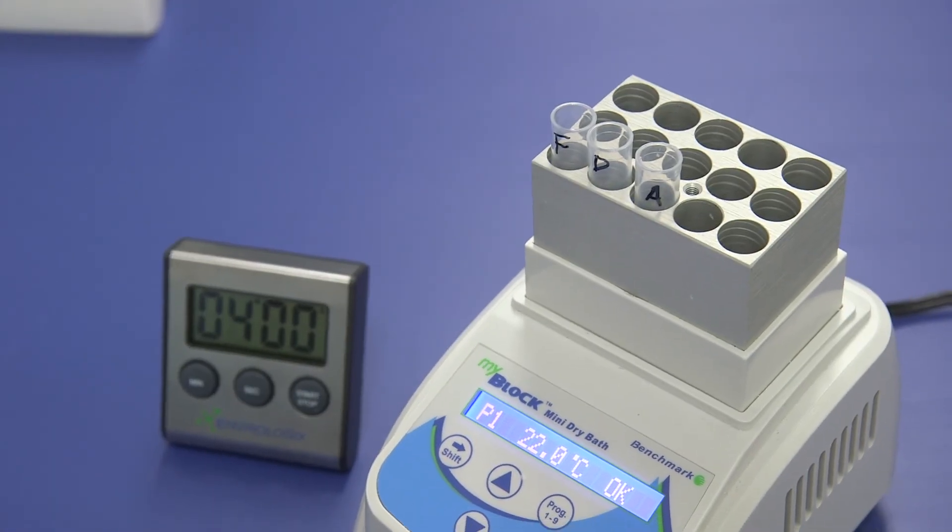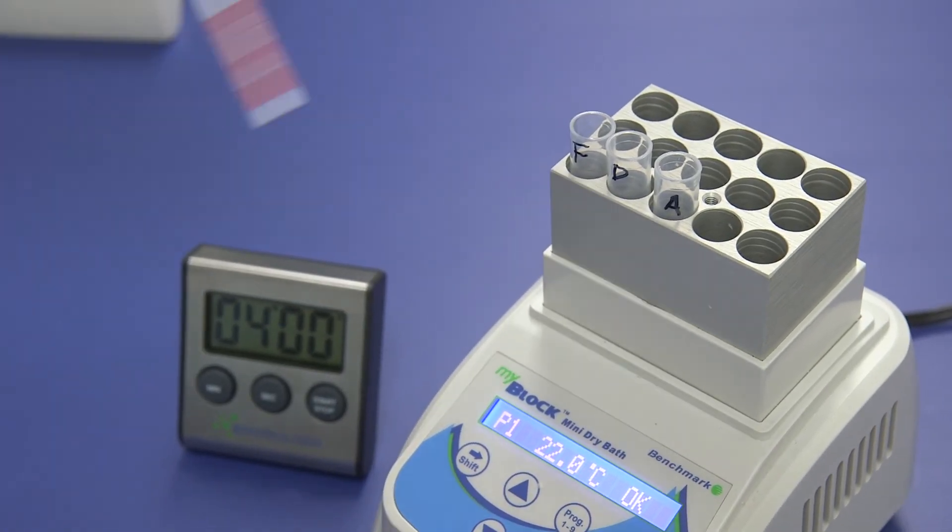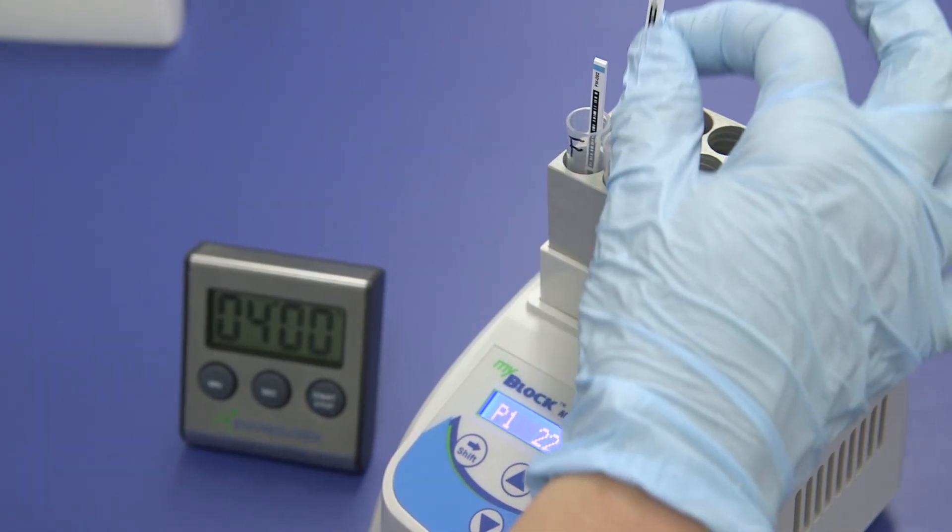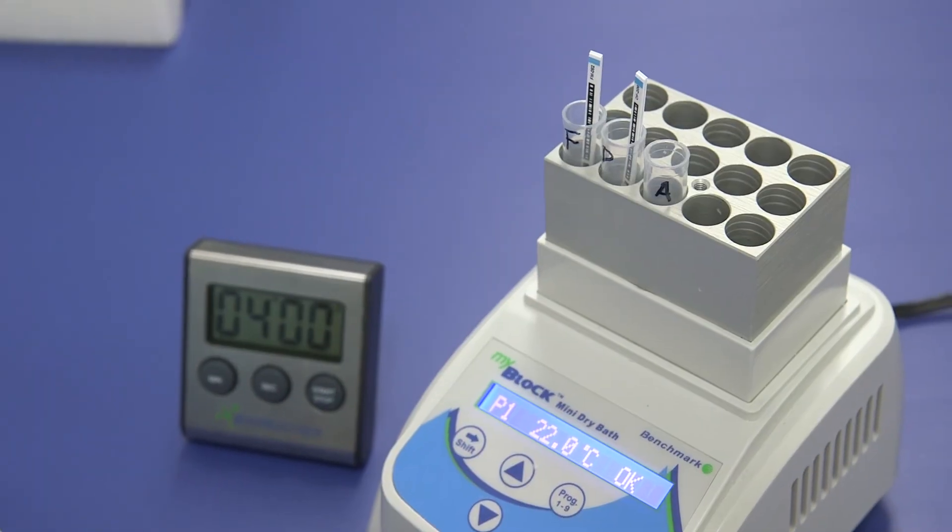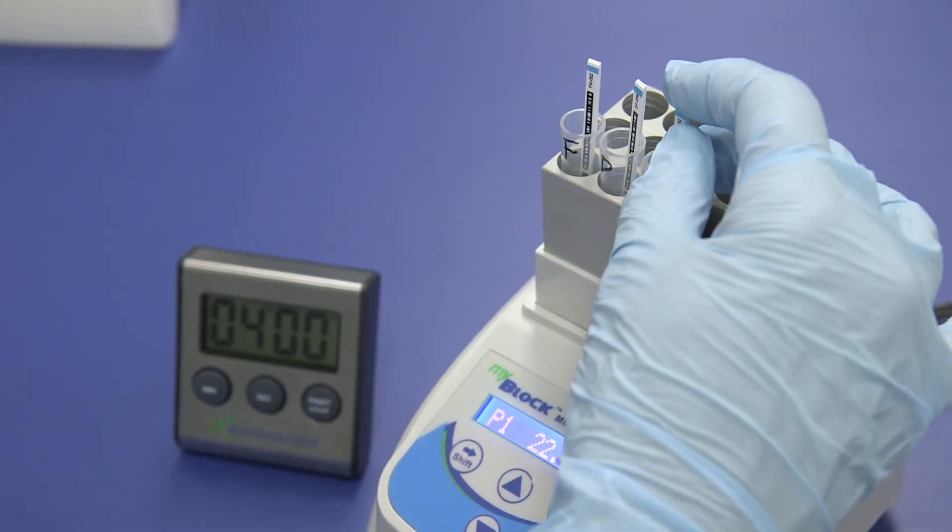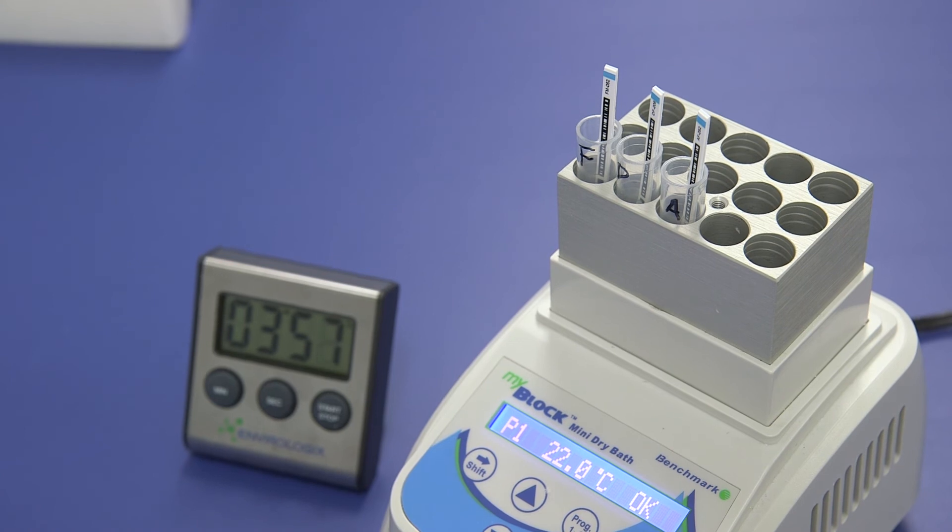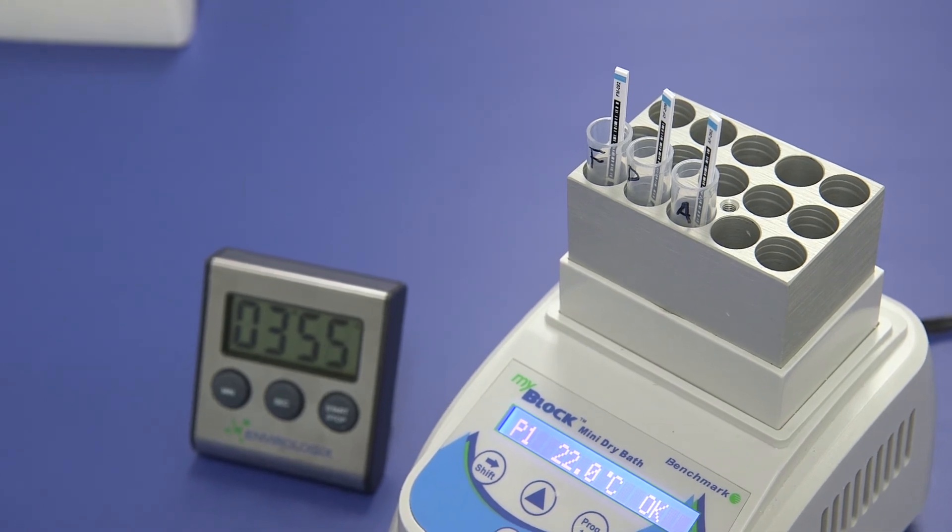In quick succession, add a Fumonisin Flex test strip to the F tube, add a DON Flex test strip to the D tube, and add an Aflatoxin Flex test strip to the A tube, arrows pointing down. Allow the strips to react for exactly four minutes.